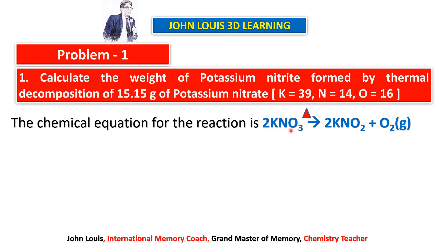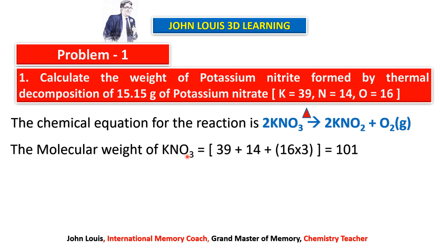The question is: 15.15 grams of potassium nitrate is heated. How much potassium nitrite is formed? First we need to find the molecular weight of KNO₃: potassium is 39, nitrogen is 14, and oxygen is 16 × 3 = 48. Summing up, the molecular weight of potassium nitrate is 101.